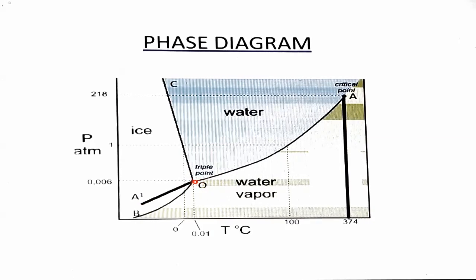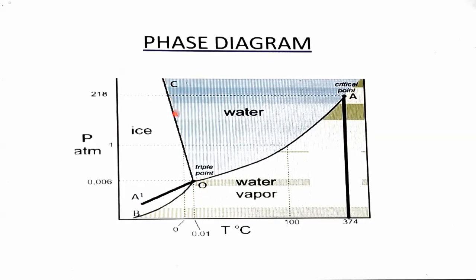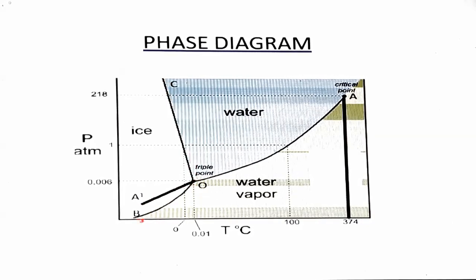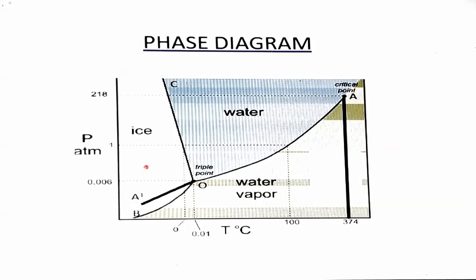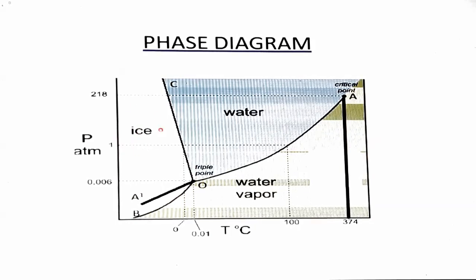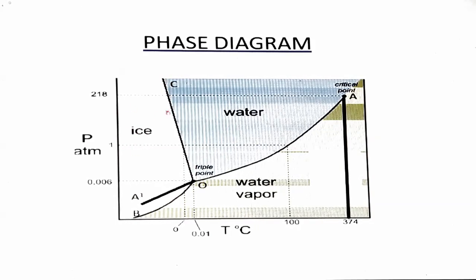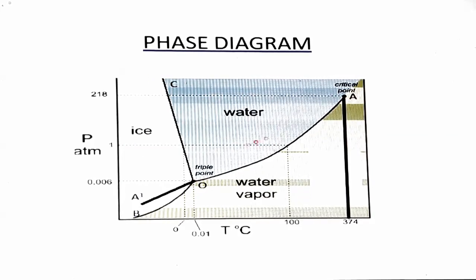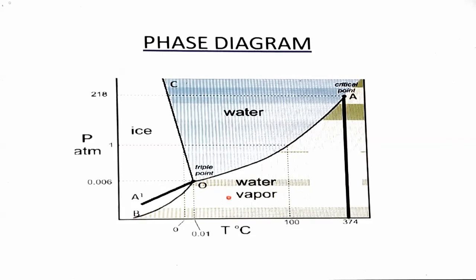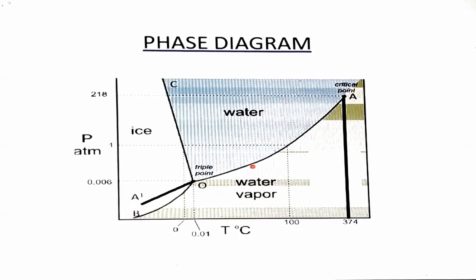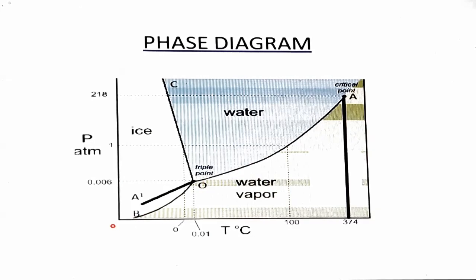We also need to look at the areas. In the COB area, only one phase exists — that is ice, the solid phase. In the COA area, only one phase exists — that is water, the liquid phase. And in the BOA area, only water vapors are present.